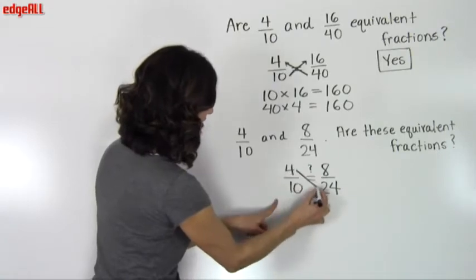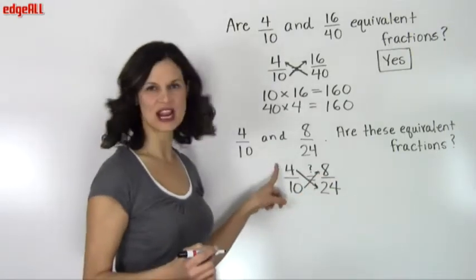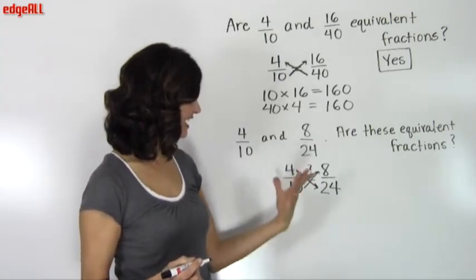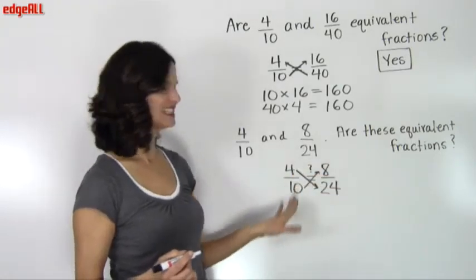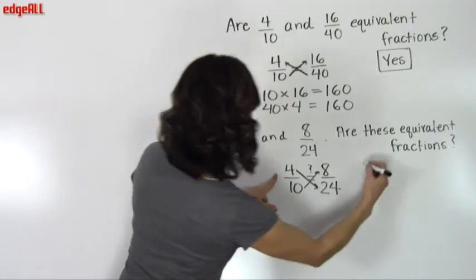And I'm simply going to do my cross multiplication. So I want to make sure that I multiply the numerator of one times the denominator of the other, and then vice versa, the numerator of the other times the denominator of the other.